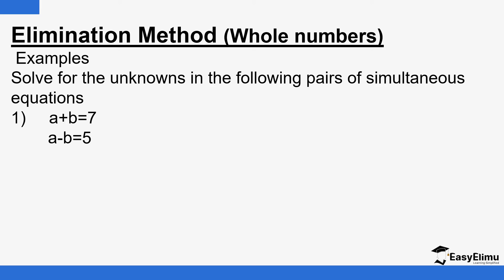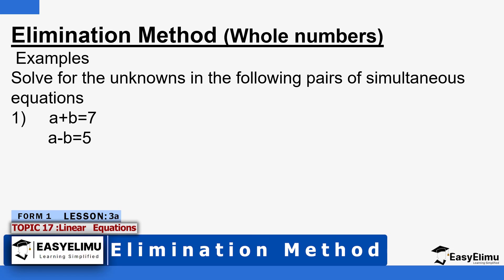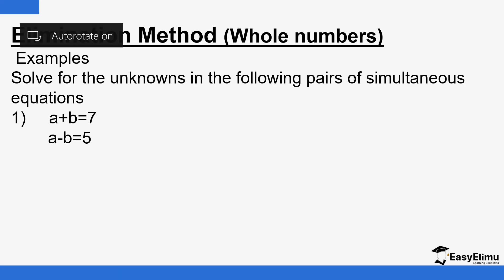Later on, we'll look at the elimination method where the coefficients are fractional — for example, when you have a half of x minus a third of y. So, solve for the unknowns in each of the following pairs of simultaneous equations. The first one is: a plus b equals 7, and a minus b equals 5. How do you solve for a and b? When we talk about solving, we simply mean finding the values of the unknowns — the value of a and the value of b.